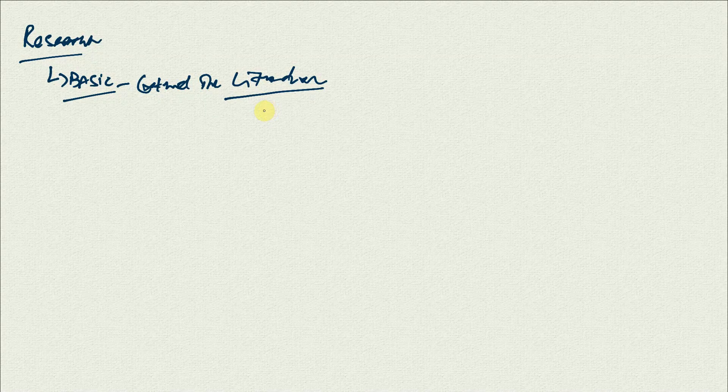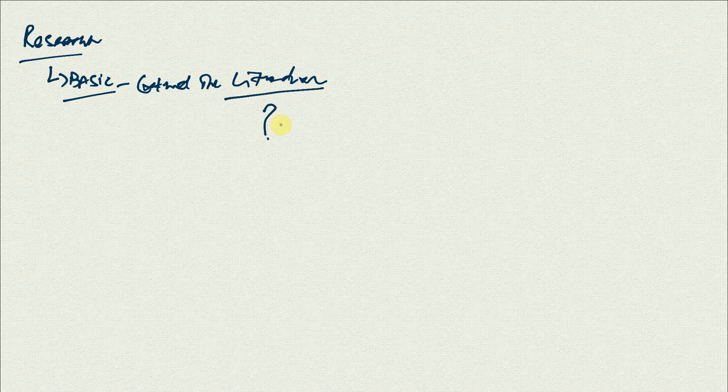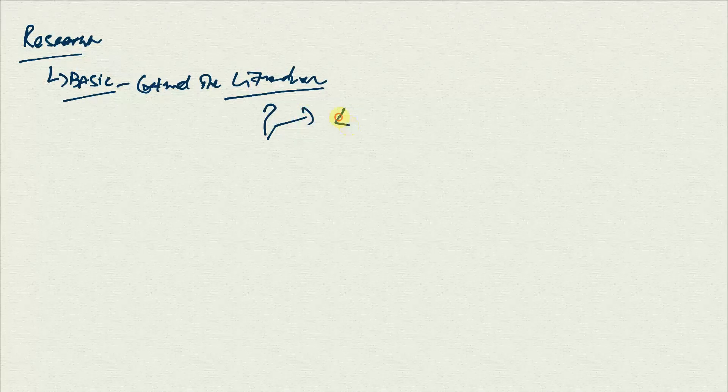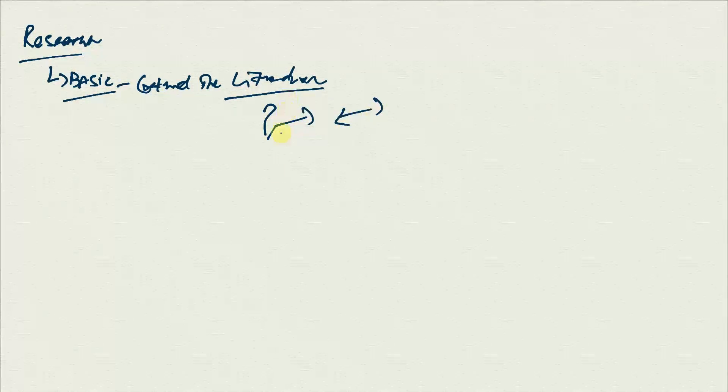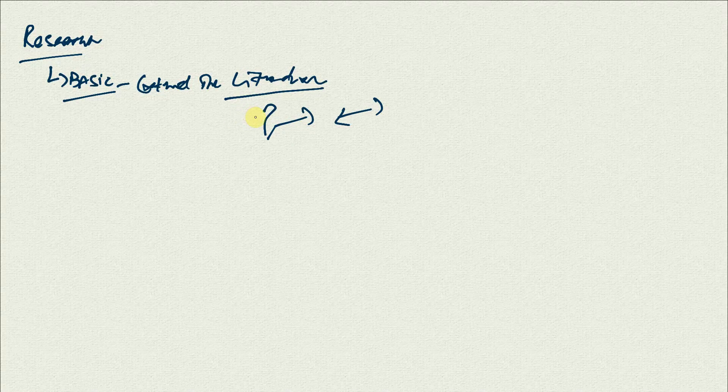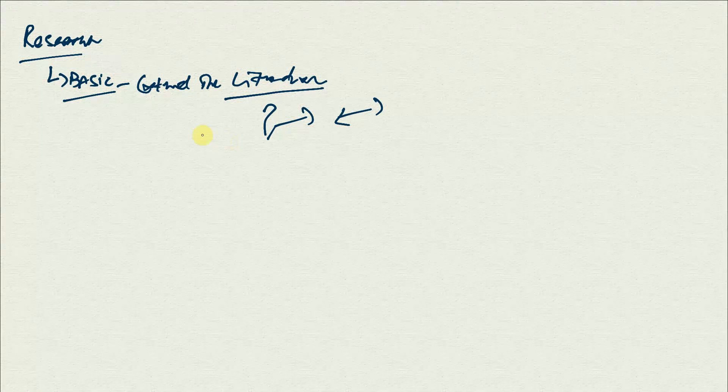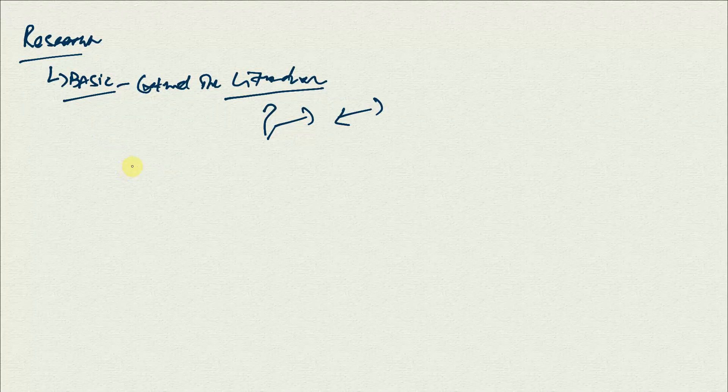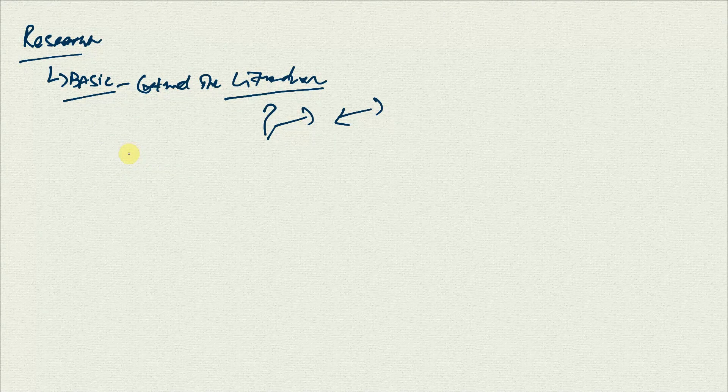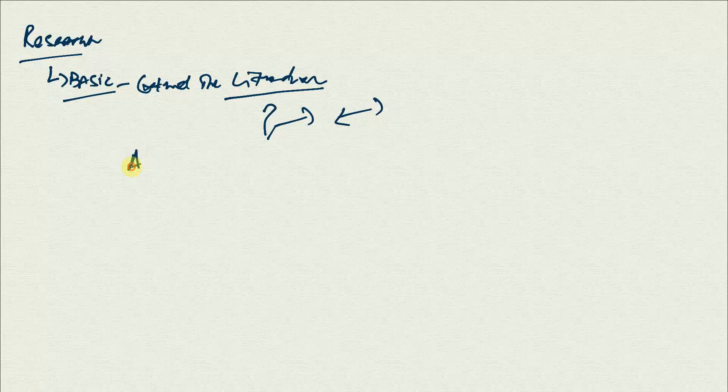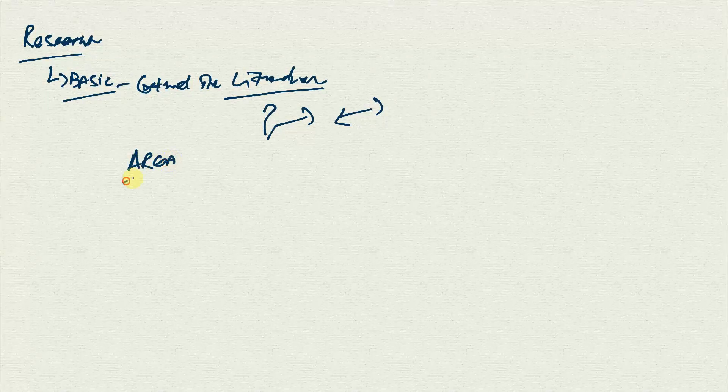So if I am going to extend the literature, whatever you are extending you should know what is available. Only then you are able to extend the literature. But before that we will have to identify what is it that I'm going to research on. The first thing that one needs to understand is the area for research.